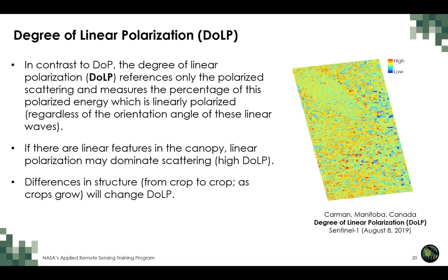The degree of linear polarization is not the same as the degree of polarization. It references only the polarized scattering and measures what percentage of that polarized scattering is linearly polarized — in any orientation angle, not just horizontal and vertical. If a canopy has linear features, the degree of linear polarization will be higher. The dominance of linear structures differs among crop types such as soybeans, wheat, canola, and corn, and the linearity of canopy structure also changes as crops develop.